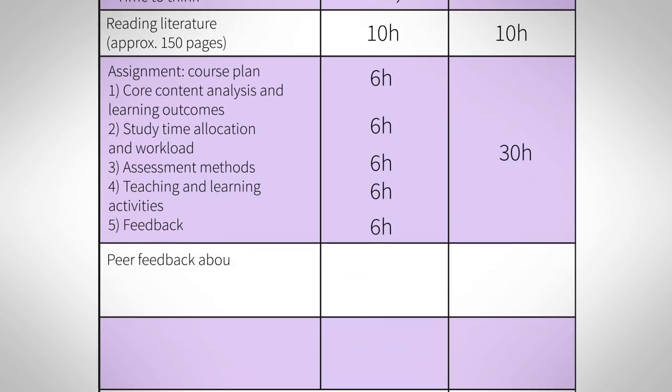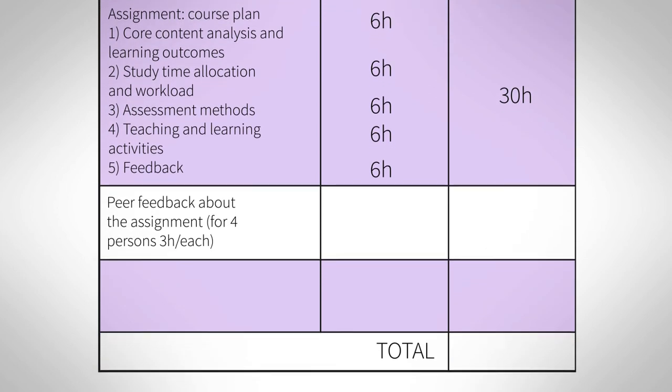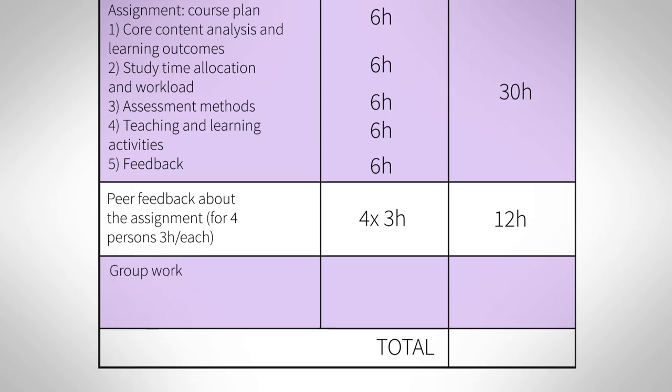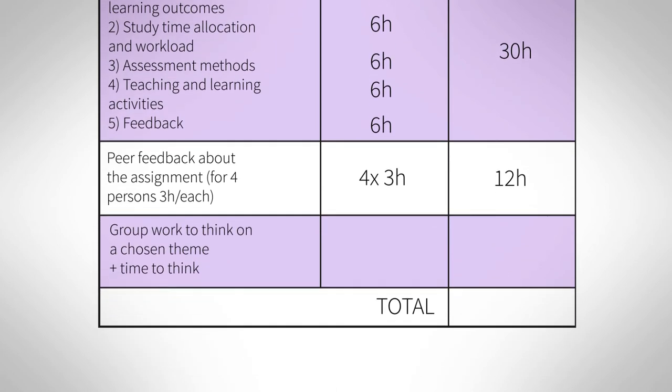The students give and receive peer feedback during the course about their assignments. Every student reads and gives peer feedback with four other students. Three hours is reserved for the feedback with one student, and it also includes time to think. In addition, the students do group work during the course. According to the time allocation model, the time reserved for this should be in a one-to-two ratio, meaning that when there is one hour of actual active working time with the group, there should be twice as much time spent on preparing and having time to think. So the total time for the group work is 33 hours.